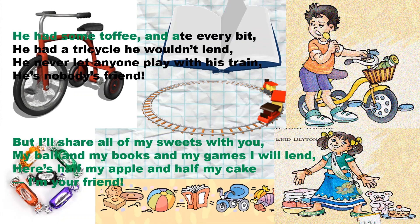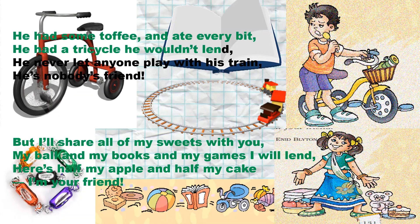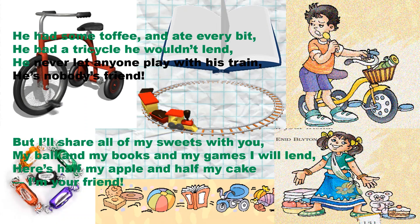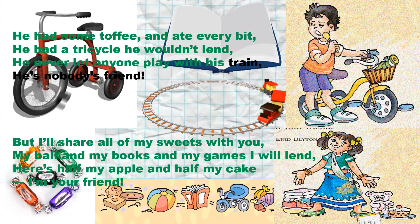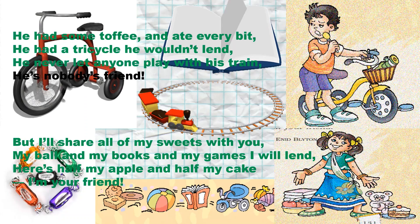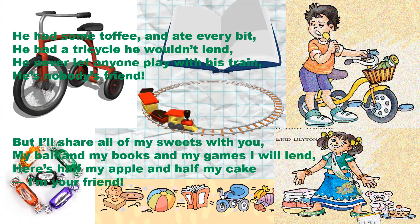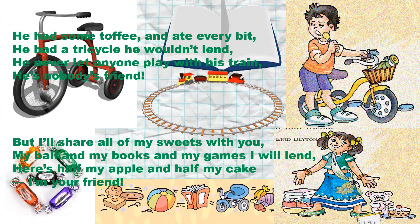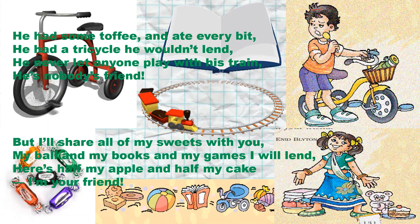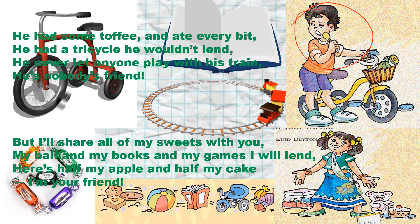He had some toffee and ate every bit. He had a tricycle he wouldn't lend. He never let anyone play with his train. He is nobody's friend. So this is what the poem says about this child.